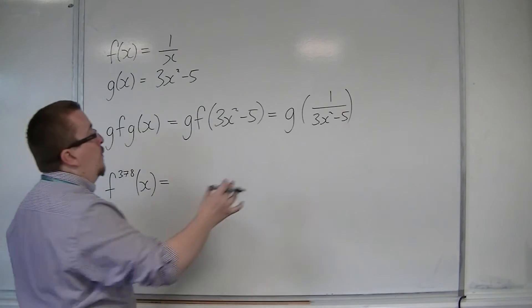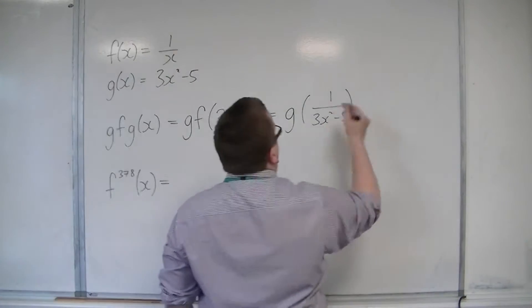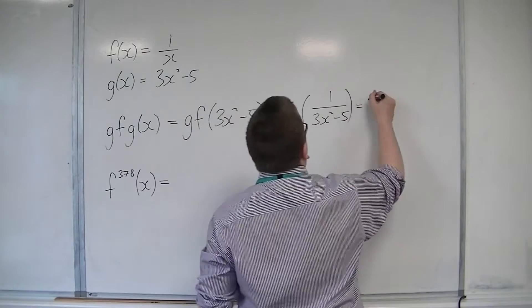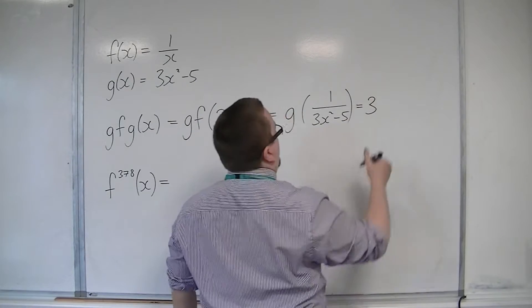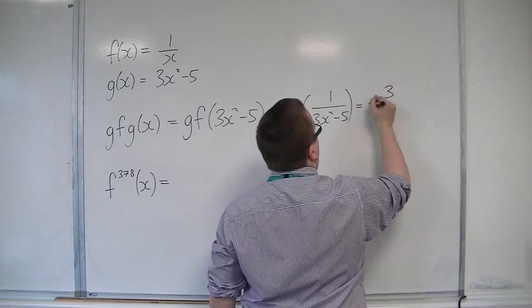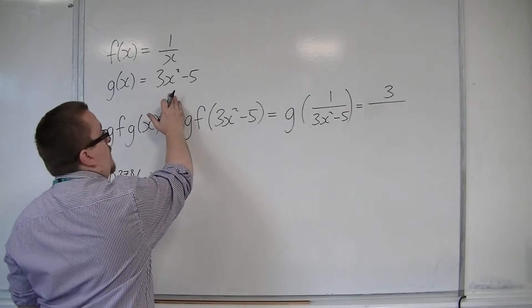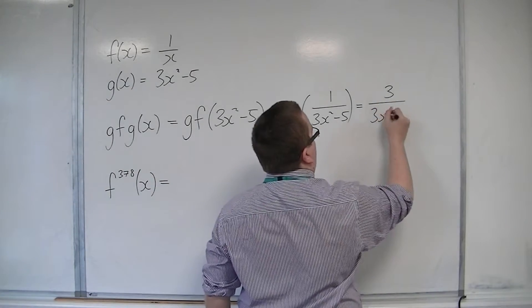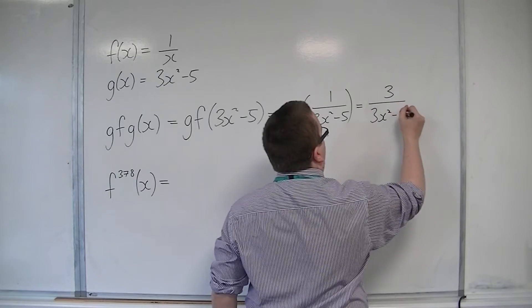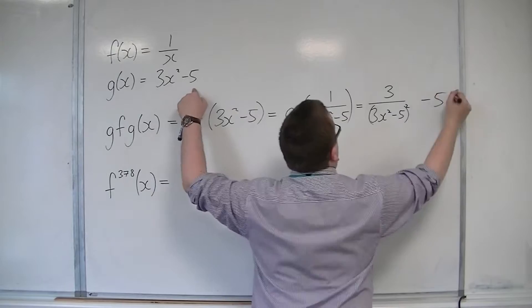And then, the 1 over 3x squared minus 5 is going to g of x. So this would be equal to 3 lots of 1 over, so I'll put the 3 there, 3 over, 1 over 3x squared minus 5 squared. So 3x squared minus 5 squared, and then you've got that take away 5 on the outside.